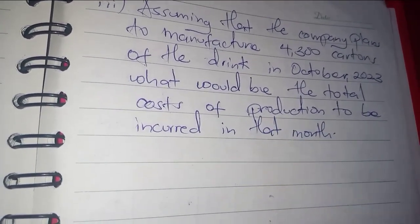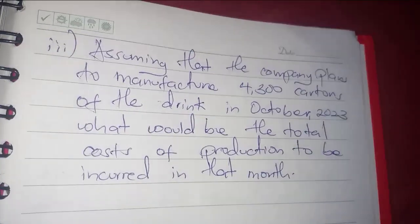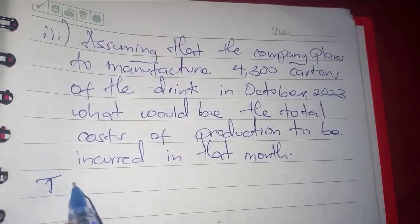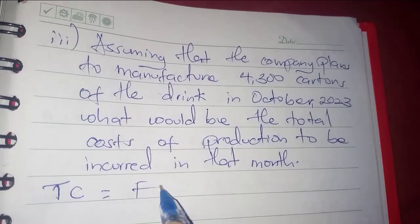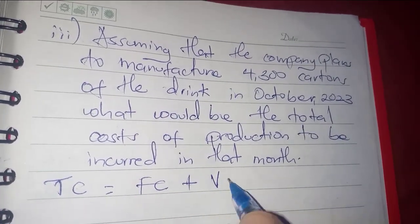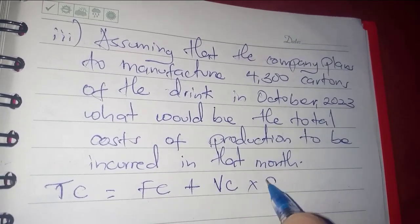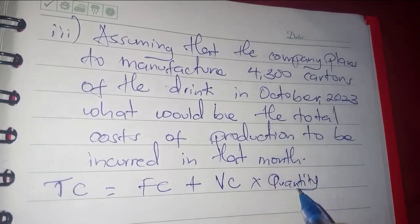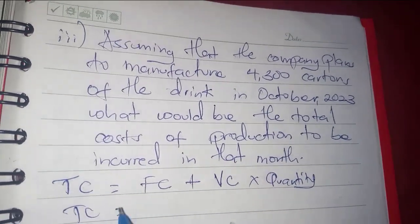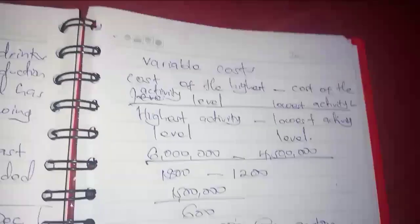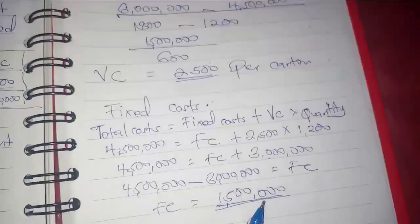So we need to determine the total cost. Total cost equals fixed cost plus variable cost times quantity. We had already determined the fixed cost, it's here, it is 1.5 million.